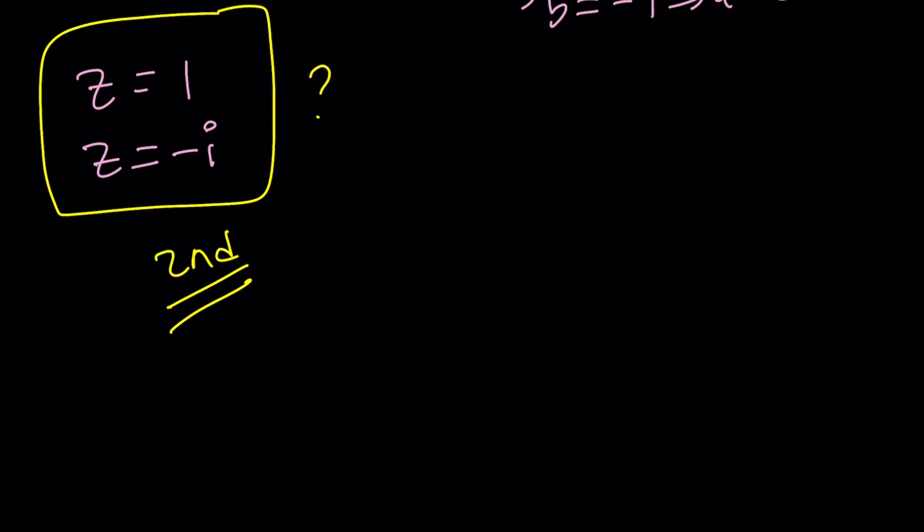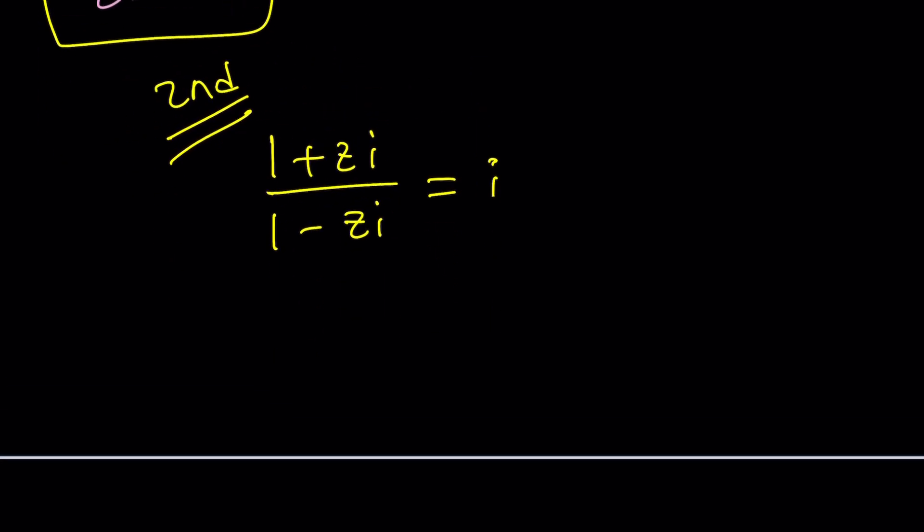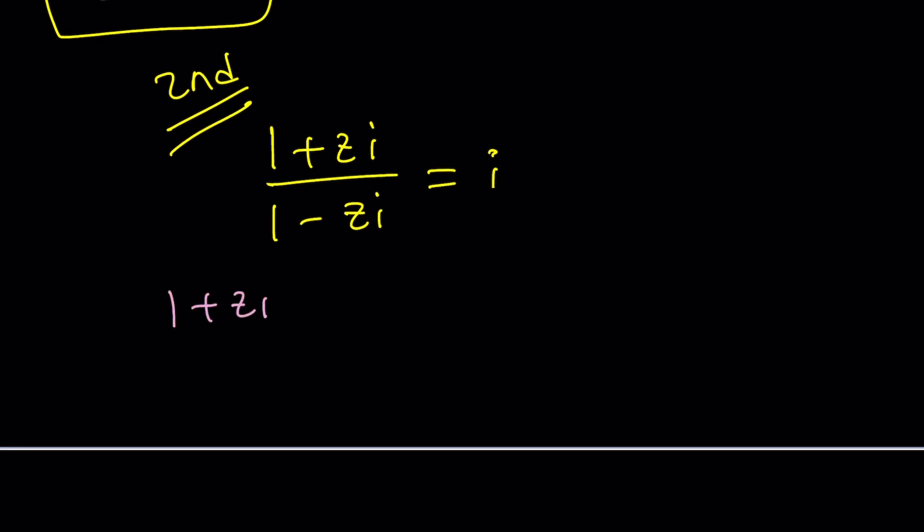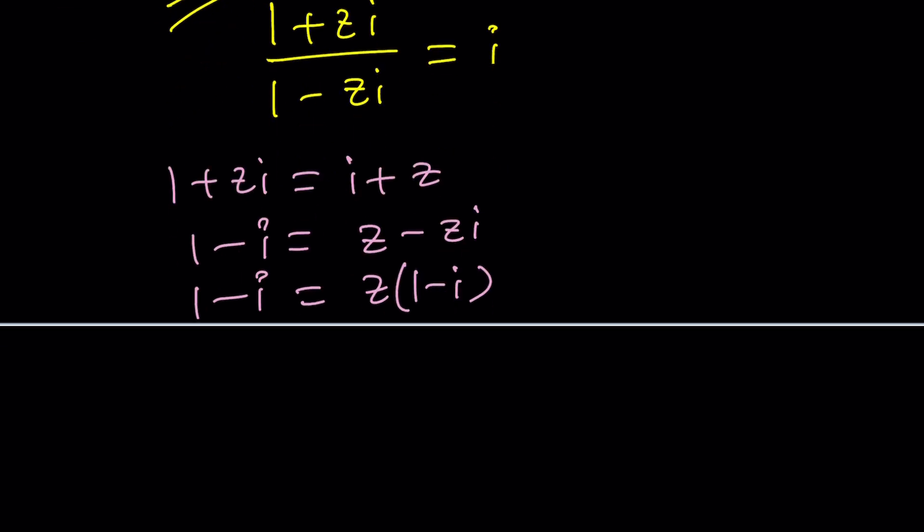The second method is going to use a nicer approach because the first method was super brute forcey and too long. Just wanted to show you how that method works. But the second method is cross multiply. Cross multiplying gives 1 plus zi equals i minus zi squared. zi squared is negative z, so this turns into i plus z. Putting the z's together: 1 minus i equals z minus zi. Then 1 minus i equals z times (1 - i). Divide by 1 minus i, you get z equals 1.